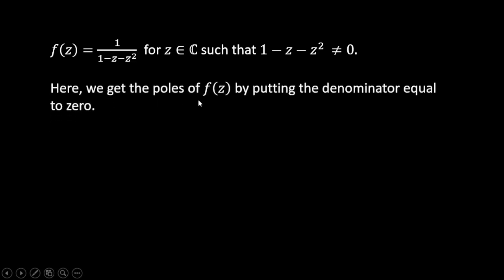Here we get the poles of f(z) by putting the denominator equal to zero. So 1 - z - z² = 0, which is the denominator of the function, and from this we can write z² + z - 1 = 0.